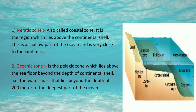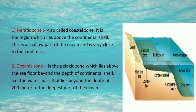The second horizontal division is the oceanic zone. It is the pelagic zone which lies above the sea floor beyond the depth of the continental shelf — the water mass that lies beyond 200 meters to the deepest part of the ocean.